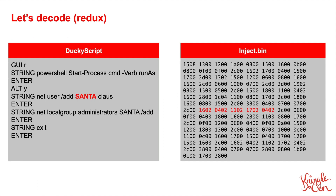Let's step back and look at that original ducky script from the beginning and look at the inject.bin that comes out of it. You can see 15 08 that starts us off — that's the GUI R we've already seen. Then there's a long string, and here I've highlighted 'Santa' in the ducky script and also where it exists in the inject.bin. You can see the shifts and 04 02 which we know is capital A appearing a couple of times. As ducky scripts get longer and longer, we're not going to want to read raw hex to figure out what they're doing, so let's use Mallard.